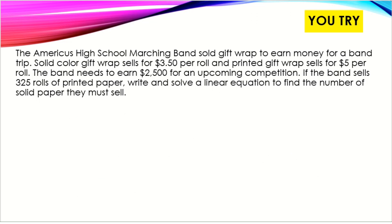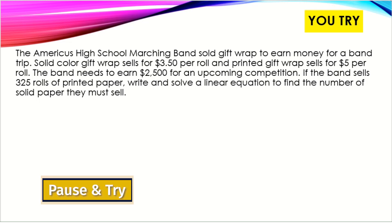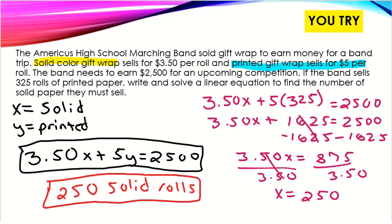Here's a problem I'd like you to try on your own. Remember to first define your variables for your two different objects, set up your equation, then plug in the given value to find the other item. Go ahead and pause the video and try it. The equation is 3.50x + 5y = 2500, and we were looking for solid rolls — the answer is 250 solid rolls.